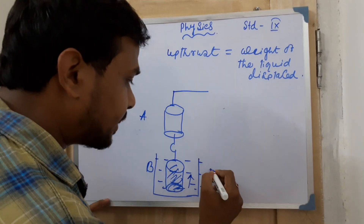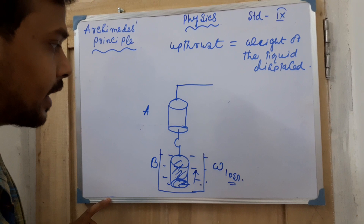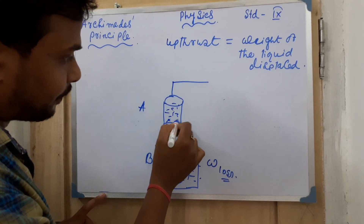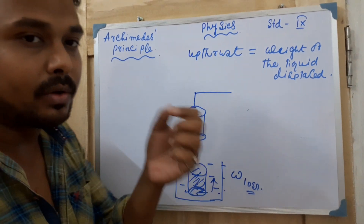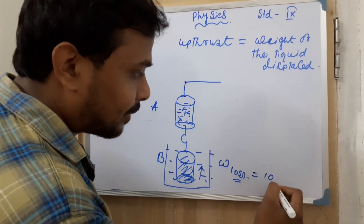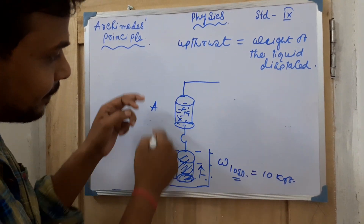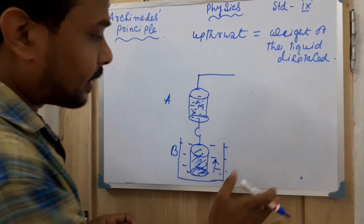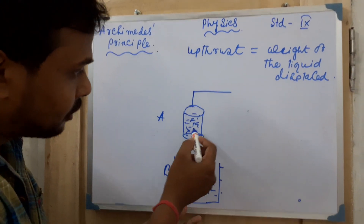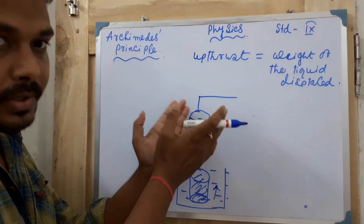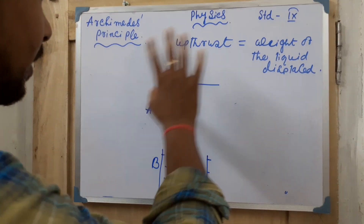You have measured the weight loss when the solid cylinder was placed in the liquid. Now you pour that same amount of liquid into the hollow cylinder. When you add that liquid — suppose it is 10 kgf — the same value comes back on the balance. This confirms that upthrust equals the weight of the liquid displaced, which is the experimental verification of Archimedes' principle.